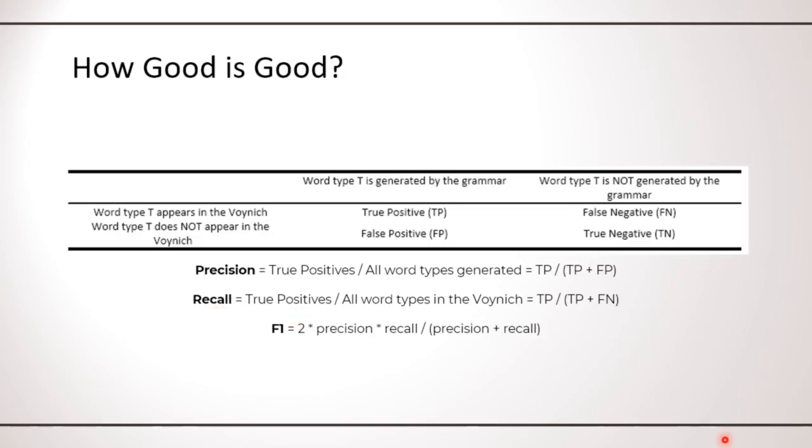A grammar with recall 1 or 100 percent will generate all words in the Voynich, but it might generate many more that are not in the text. And you can imagine there is a tension between precision and recall. And one can increase recall by having a grammar to generate more words, but this increases the risk of generating words which are not in the Voynich, which reduce the precision. So there is a need for a single number that represent a compromise between best recall and best precision. In theory of classifier, this number is called F1 score and is defined as you can see here.